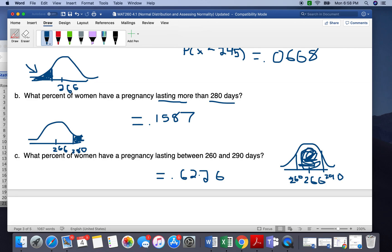So that is our probability. And the percent would be 62.26%. So about 62% of women have a pregnancy between 260 and 290.